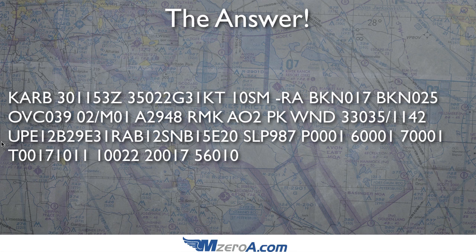Now it's getting really tough. UP means unknown precipitation. You might say: wait, you just told me with the AO2 that they do have an automatic precipitation discriminator — so why are they showing UP, unknown precipitation? I'll show you why in a moment. The E means ended — the unknown precipitation ended 12 minutes past the hour. It began again: B means began, 29 minutes past the hour. Then it ended again, 31 minutes past the hour.